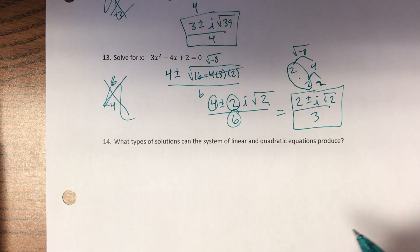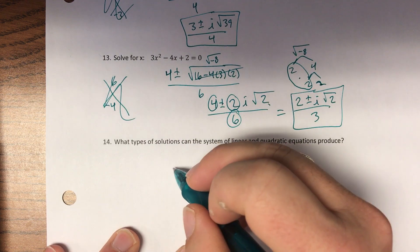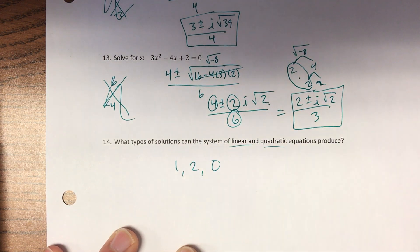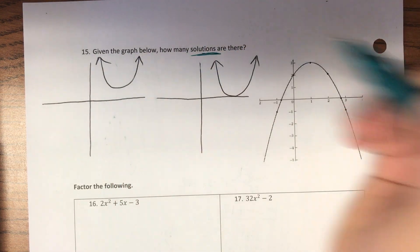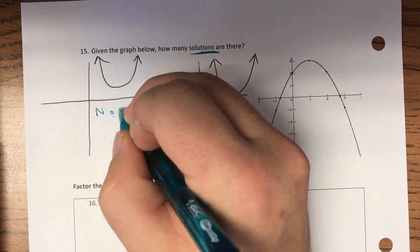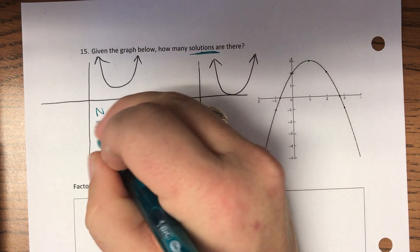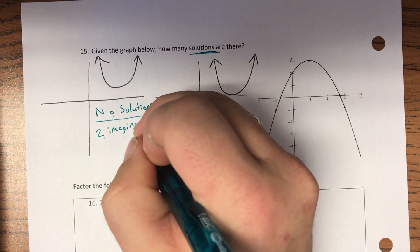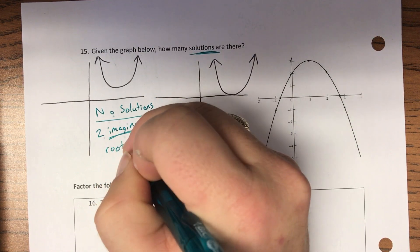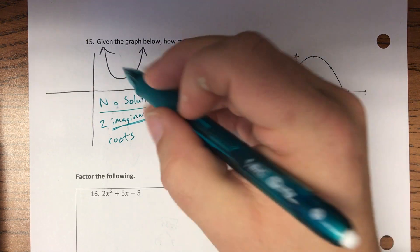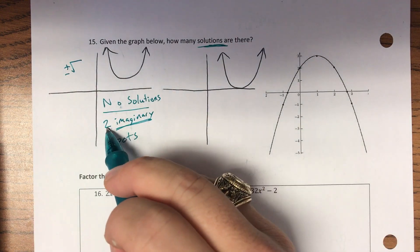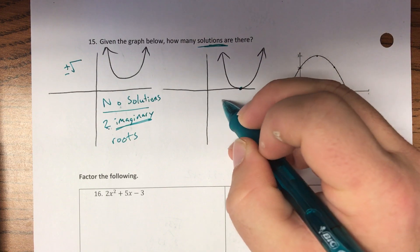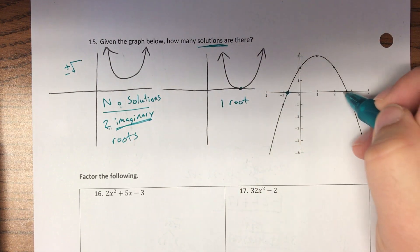Number fourteen — a linear and quadratic system can have one solution, two solutions, or no solutions: 1, 2, or 0. Number fifteen asks how many solutions based on a graph. The parabola that never hits the x-axis has 2 imaginary roots — it's 2 because of the plus-or-minus in the quadratic formula. The one that touches at one point has 1 root. The one that touches at two places has 2 roots.